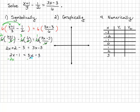Then to get x by itself, subtract 2x from both sides and add 3 to both sides. We get 2 is equal to x. That's our answer.